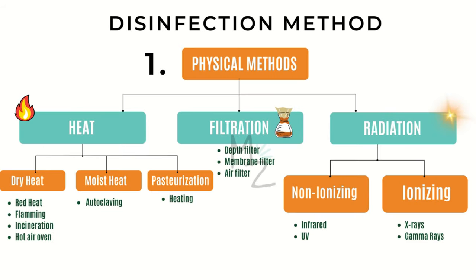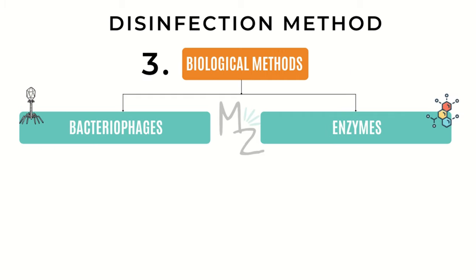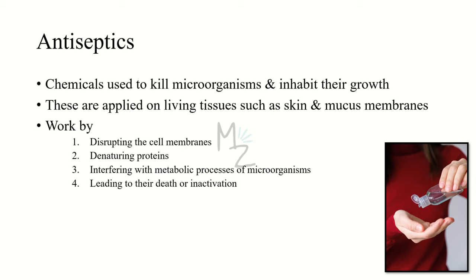The physical methods of disinfection are similar to those of sterilization, but the chemical methods differ. Chemical methods of disinfection include disinfectants such as bleach, which kills bacteria and viruses by oxidizing their cell membranes, hydrogen peroxide, and alcohol. Antiseptics include iodine, chlorhexidine, and hydrogen peroxide. Biological methods include bacteriophages — viruses that infect and replicate within bacteria — and enzymes, which are biological catalysts.